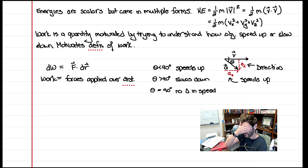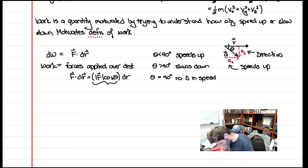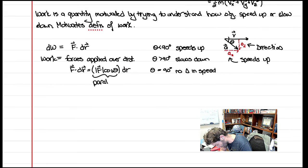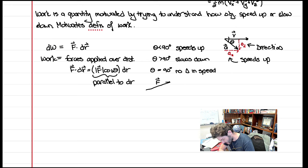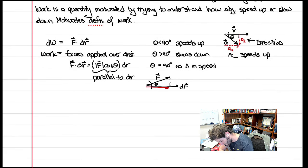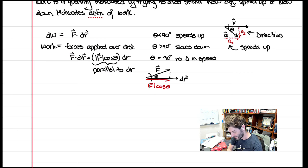By the nature of the dot product, F · dr equals the magnitude of F times cosine theta times the magnitude of dr. Drawing the triangle: F is the hypotenuse, dr is the base, theta is the angle between them. There is a component of F parallel to the displacement, which by SOHCAHTOA is F cosine theta. The dot product extracts that parallel part, which is what determines if I speed up or slow down.